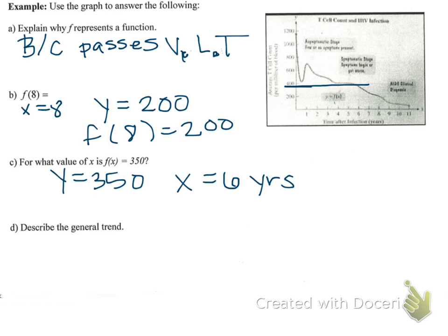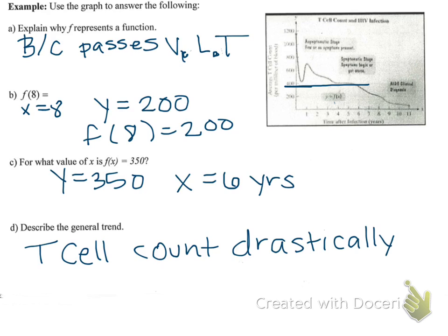And then lastly, letter D says describe the general trend. So I would say the T cell count drastically drops, then it increases, followed by a steady decline.